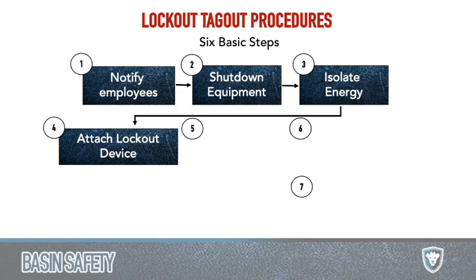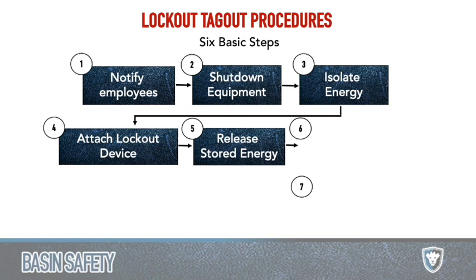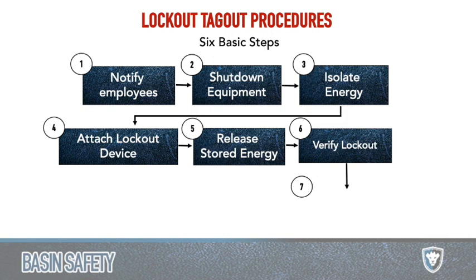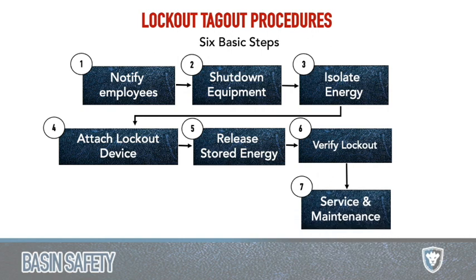Step five: release stored energy, typically by trying to turn it on or bleeding it off — maybe there's half a revolution left in a fan blade or some residual electricity. Step six: verify the lockout — test it multiple times to make sure nothing's going to happen. Basically, you try to turn the thing on at that point. Step seven: perform service and maintenance. Those are the seven steps of a lockout tagout process.